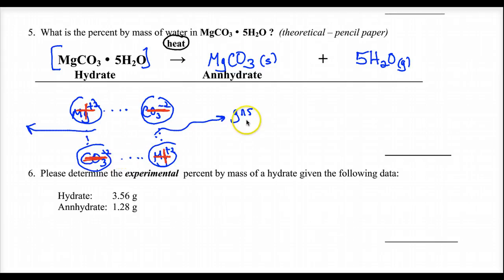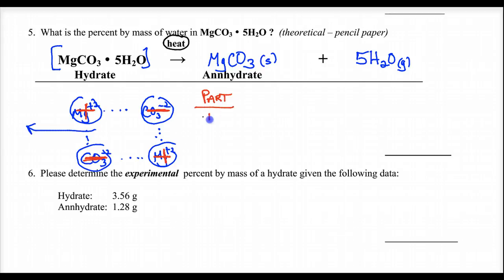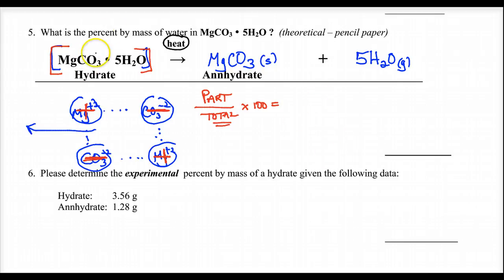In this question, they want the percent by mass of water in this hydrate. Percent by mass is part over total times 100. The total is the entire mass of one of these, or per one mole. So we need to find the total by doing a formula mass — or gram formula mass — of the entire hydrate.